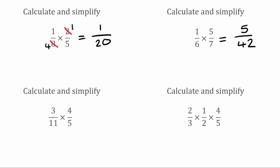We've then got 3 over 11 multiplied by 4 over 5. Again, seeing if we can cross-cancel these. We've got 3 and 5 — the highest common factor is 1, so we can't cancel them down. The other way, we've got 11 and 4 — again the highest common factor is 1, so we can't cancel them. So we're just going to multiply it through. We're going to do 3 times 4 first, which gives us 12. Then on the bottom we're going to do 11 times 5, which gives us 55. So our answer to that one simplified would be 12 over 55.